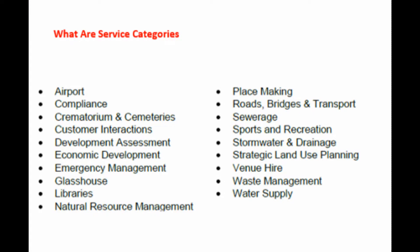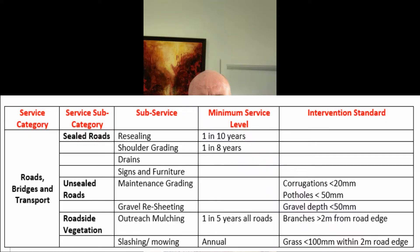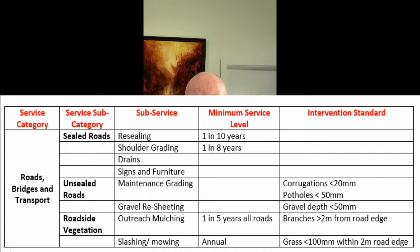Let's begin by looking at the question: what is a service? I've brought up on your screen 20 service categories — these are really broad. For example, the airport, crematoriums, glasshouse, roads, sport and recreation. We then break down those 20 major service categories into subcategories. For example, if we looked at roads, we have sub-service categories such as sealed roads, unsealed roads, vegetation. Then we have a sub-service within each — sealed roads is broken down into resealing, shoulder grading, drains, signs and furniture, and so on.